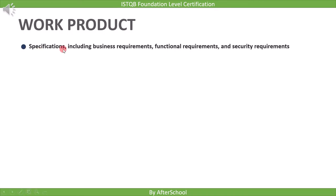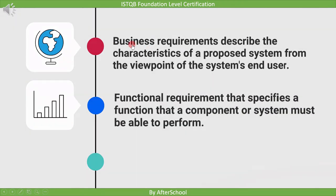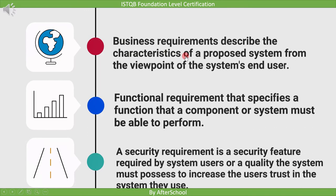The first work product is specifications, including business requirements, functional requirements, and security requirements. Business requirements describe the characteristics of a proposed system from the viewpoint of the system's end user — it is a high-level requirement from the point of view of the user. Functional requirements specify a function that a component or system must be able to perform — a low-level requirement for the technical team to implement. A security requirement is a security feature required by system users, or a quality the system must possess to increase the user's trust in the system they use.